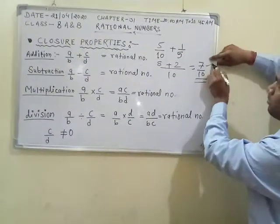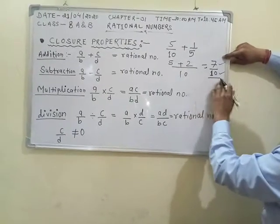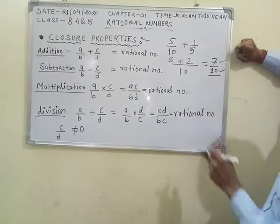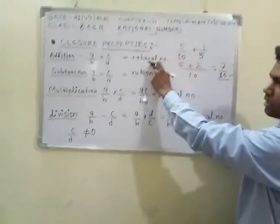There is p, there is q. It is a form p/q where q is not equal to 0. Here q is 10, so this is a rational number.